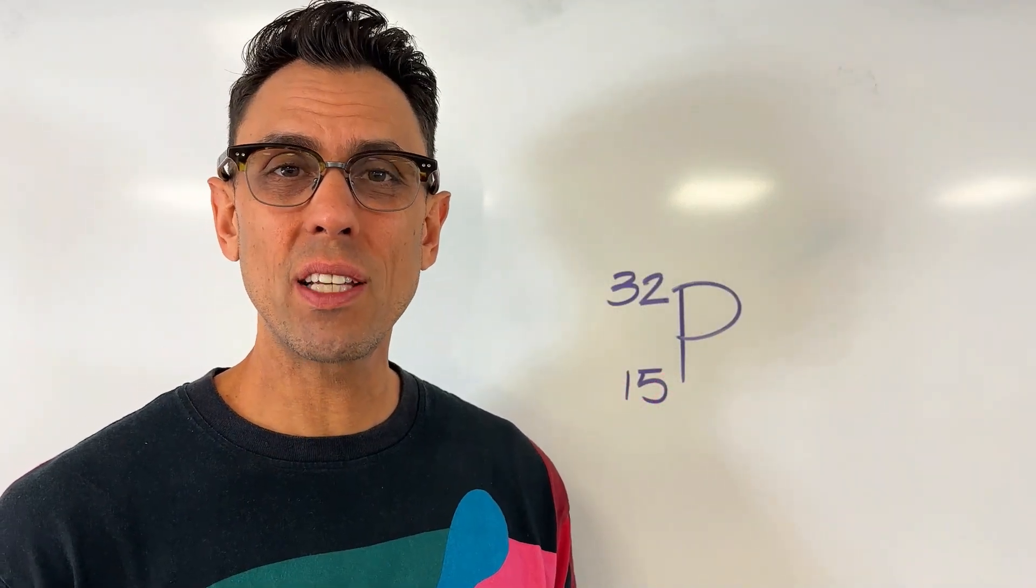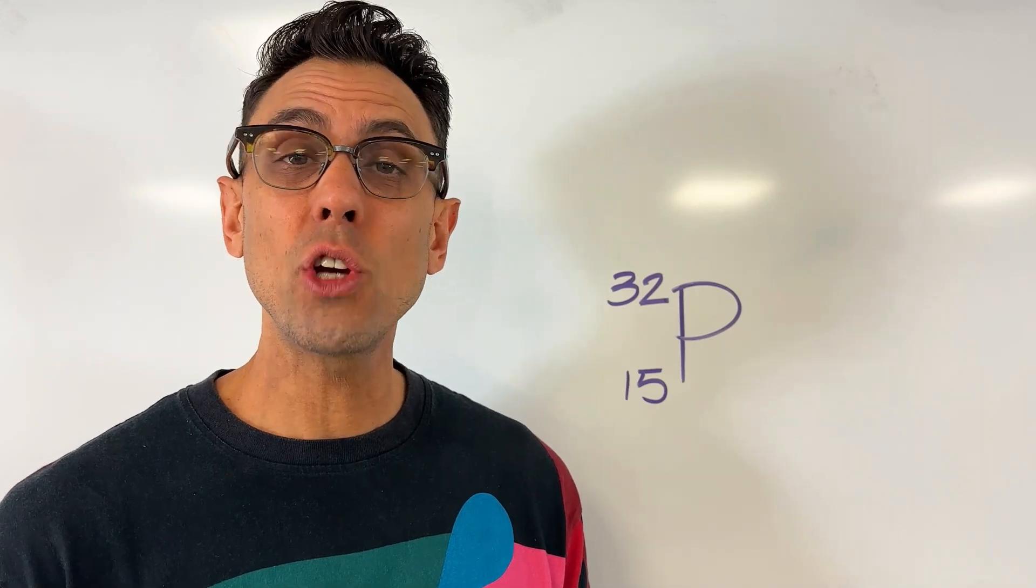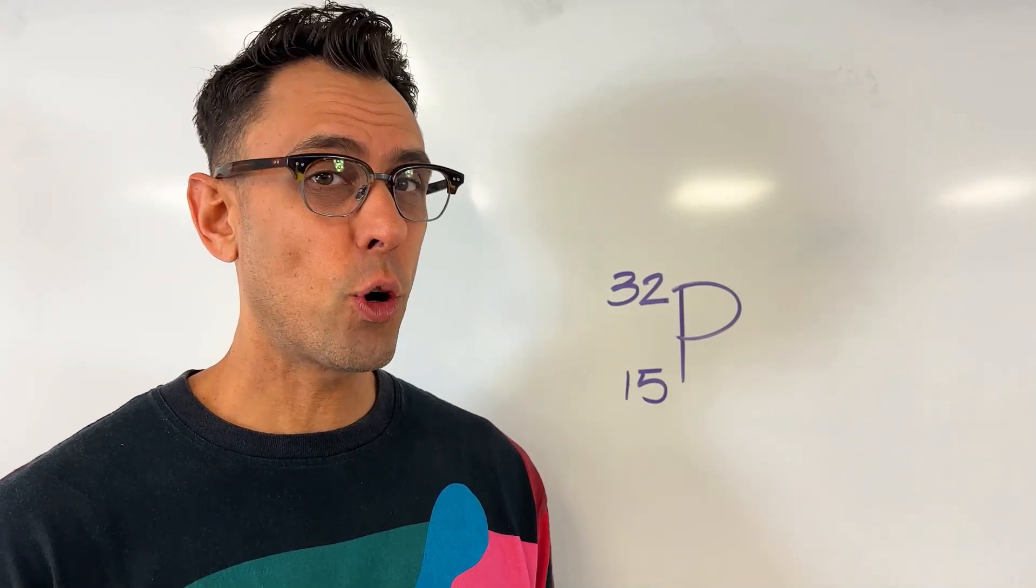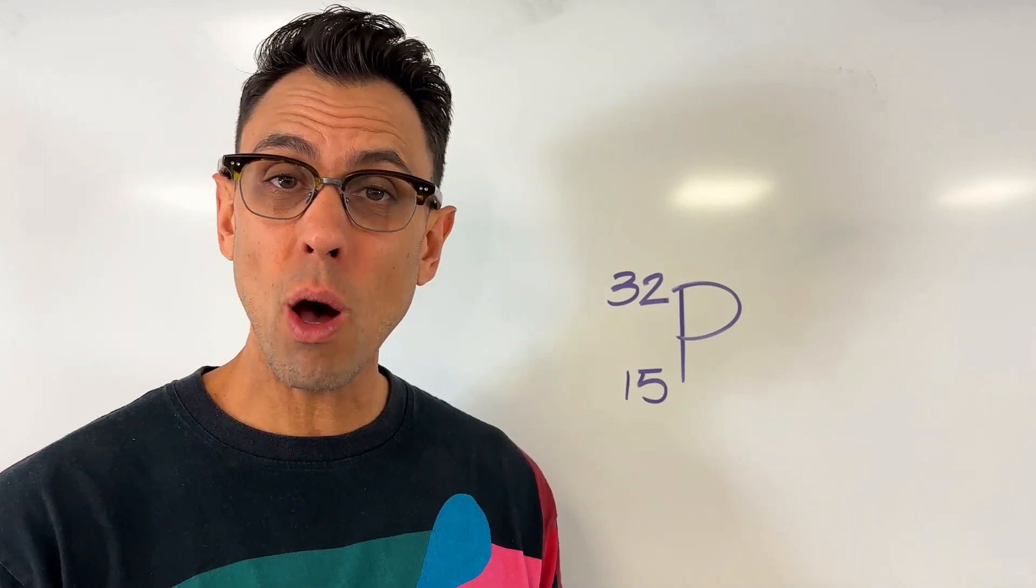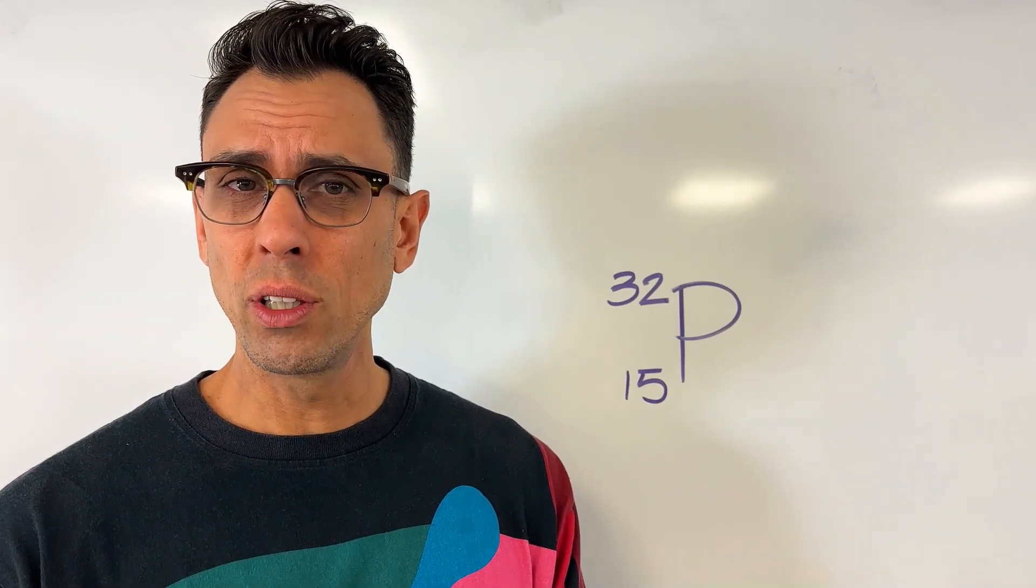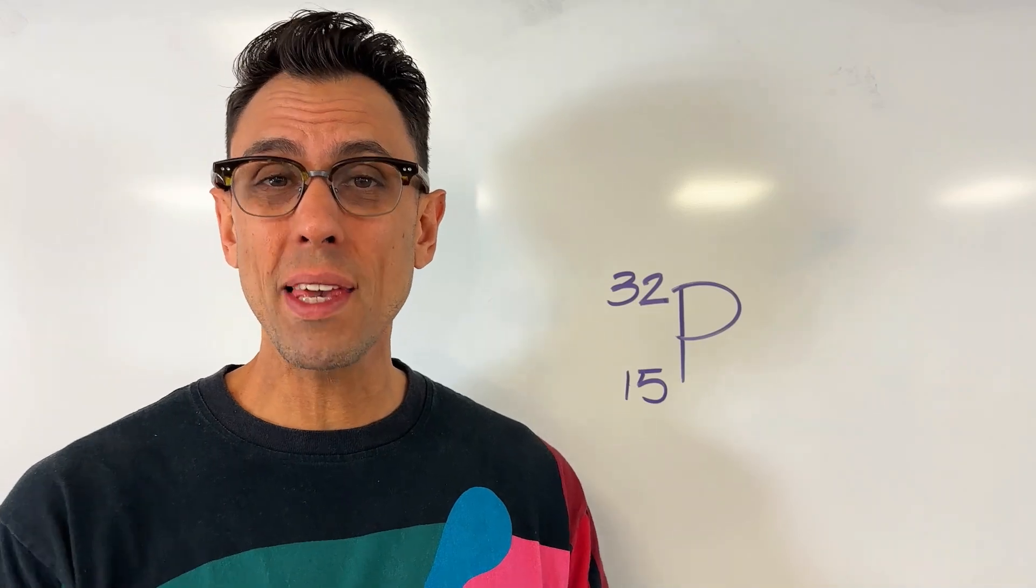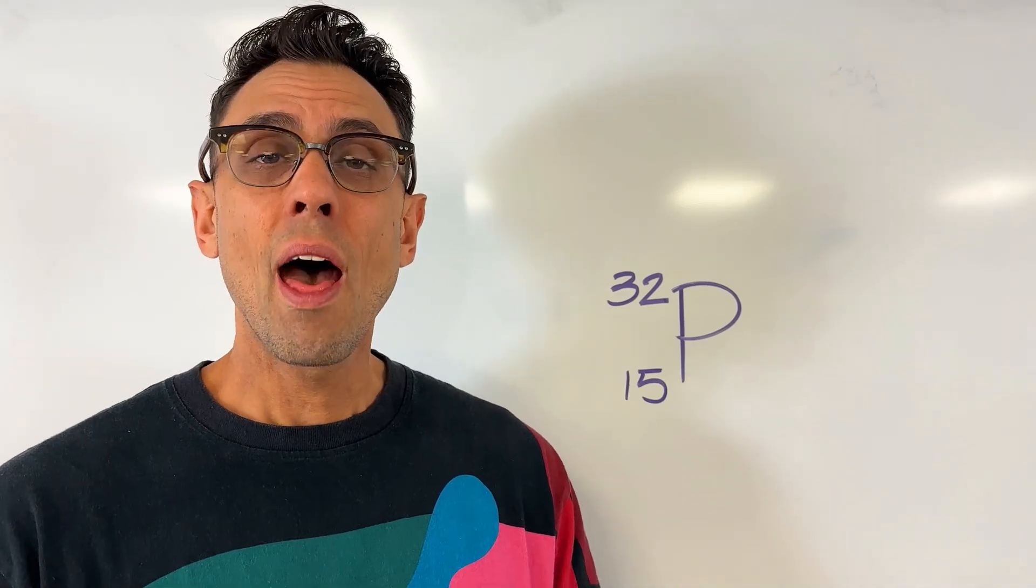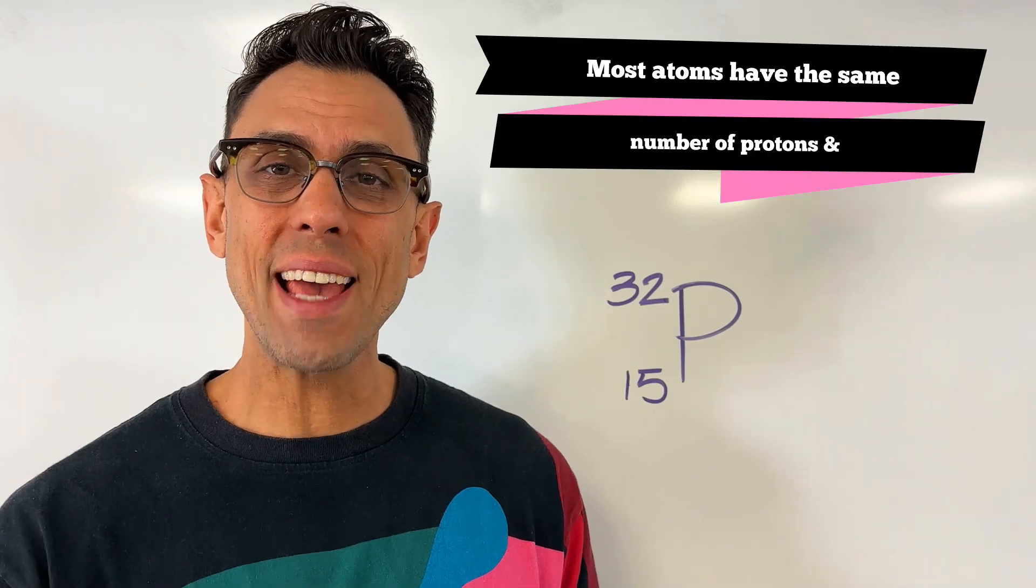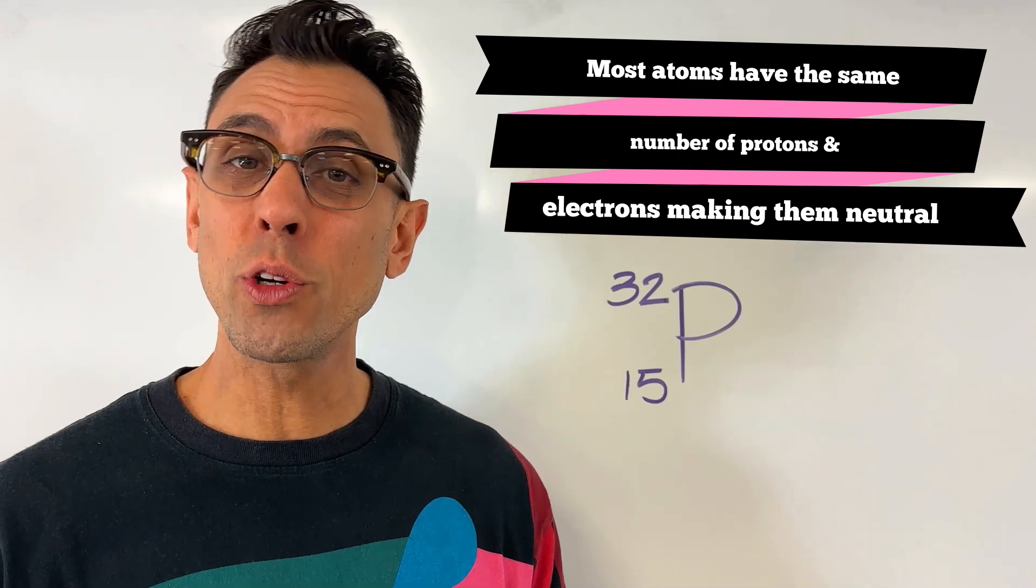The vast majority of the time, atoms are considered to be neutral objects. When I say neutral, I mean they don't have any electrical charge. Now of course, we know that atoms are composed of smaller particles, protons and electrons, that do have electrical charges. So how do you get an overall object that's neutral, even though the smaller pieces inside the object have charges? Well there's only one answer. The number of positive charges must be equal to the number of negative charges. The vast majority of the time, atoms have the same exact number of protons and electrons. This leads to no charge, or neutrality.